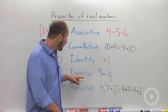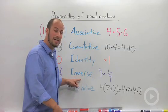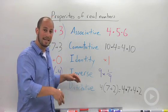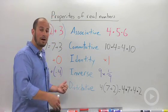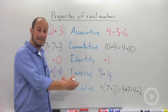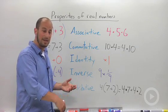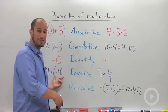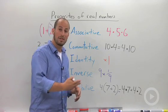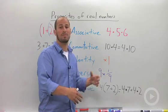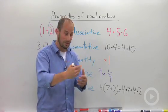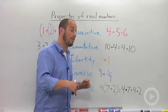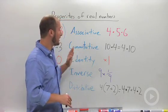The inverse property is basically the number that you want to either add or multiply to a number to get back to the identity. So if you are adding, you want to add in the opposite, the negative number of whatever you're dealing with. So if you're dealing with 4, you want to add in negative 4. Negative 4 is the inverse of 4. Likewise with multiplication, you want to get back to your identity, so you want to multiply by the reciprocal, the 1 over whatever you're dealing with. So 1 ninth is the inverse of 9 because when you multiply them together you get 1.